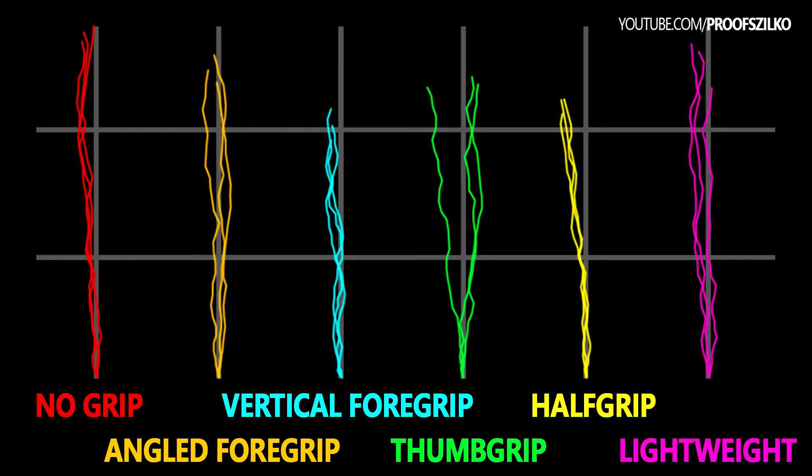In general I would say all the weapons' spraying patterns tend to lean to the left except the thumb grip, but the thumb grip in general has a really wide horizontal recoil so I wouldn't recommend it for a full auto spray at all.